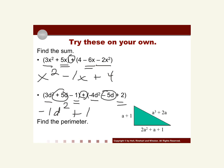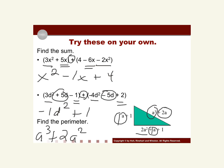For the perimeter problem, we add all sides together. There is no other a³ term, so that's my first term. Then there's just one a² term, so it's +2a². Then I have a + 2a + a — those are ones, so 1 + 1 + 2 = 4a. And I have 1 + 1 for constants, which is +2. So the perimeter of that triangle is a³ + 2a² + 4a + 2.